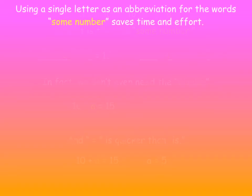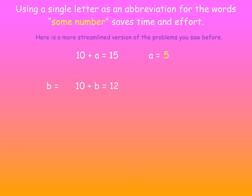Using a single letter as an abbreviation for the words some number saves time and effort. Here's a more streamlined version of the problems you saw before. 10 plus A equals 15, A is 5. 10 plus B, B must be 2. C is 8. D is 4. 10 plus E, E equals 10.